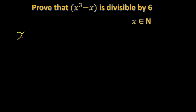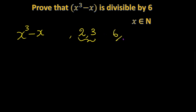We need to prove that x cubed minus x is divisible by 6. What we do here is prove that it will be divisible by 2 and divisible by 3, so what happens automatically it will be divisible by 6. This is the given expression.